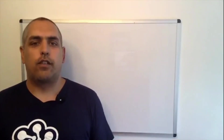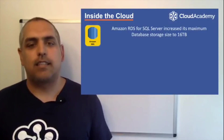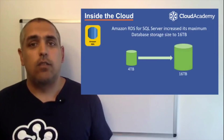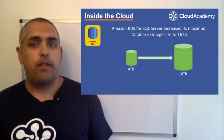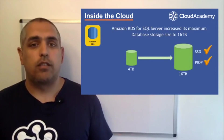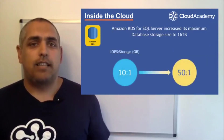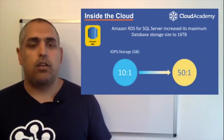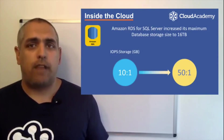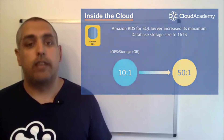Lastly, on the 24th of August, Amazon RDS for SQL Server increased its maximum database storage size to 16 terabytes. This is a huge improvement on the maximum storage sizes previously allowed, which was only four terabytes. To benefit from this new increased size, you must use SSD storage with provisioned IOPS. It's also worth noting that the ratio of IOPS to storage in gigabytes has increased hugely from 10 to 1 to 50 to 1. With both of these changes, it may now prevent you from having to shard your data across a number of instances; instead, it may be possible to run the workload on a single instance.